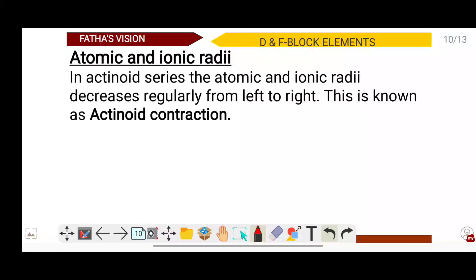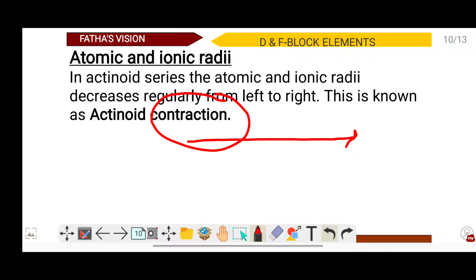In the actinoid series, atomic and ionic radius also decreases regularly from left to right, which is why we call it actinoid contraction. The reason is the same: as atomic number increases, electrons are added to the f-subshell, which has poor shielding effect, so the nucleus attracts the electrons, resulting in actinoid contraction.